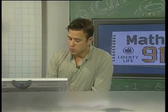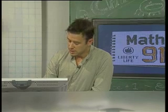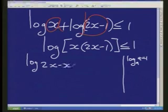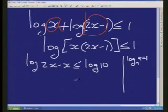So let's apply that rule over here. I'm going to multiply in at the same time, giving me 2x² - x, 2x² - x. And on this side, I have log 10.